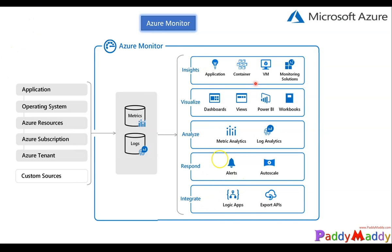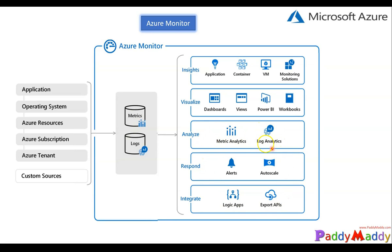Based on your metrics or logs data, you can integrate with Logic Apps or Functions, or integrate with third-party REST APIs. Once integrated, you can respond based on alerts — for example, if a VM spikes, it can trigger auto-scaling or increase the VM size. You can analyze with metrics and Log Analytics, and visualize everything in the form of dashboards, views, Power BI, or workbooks.